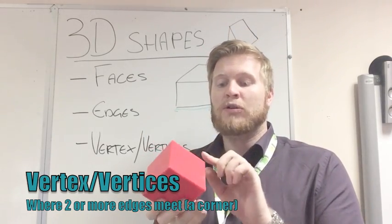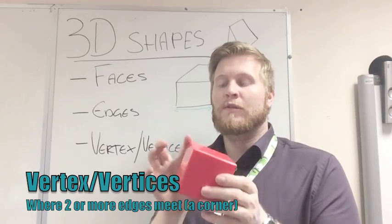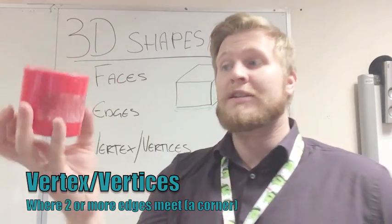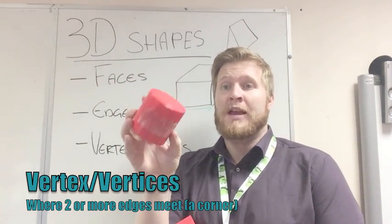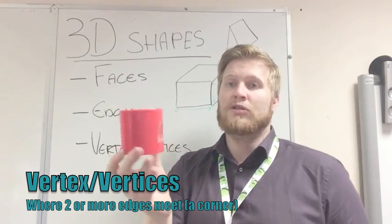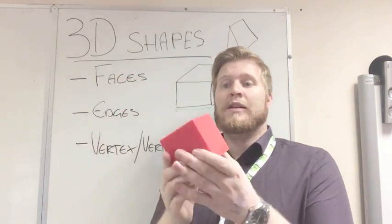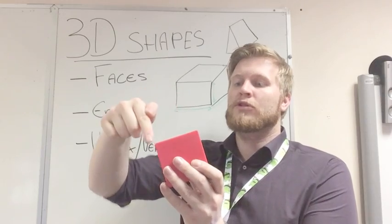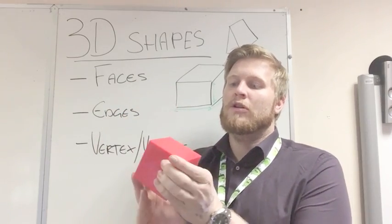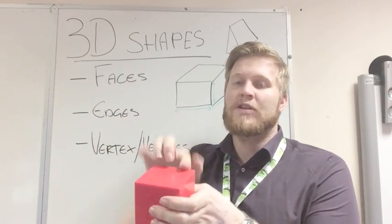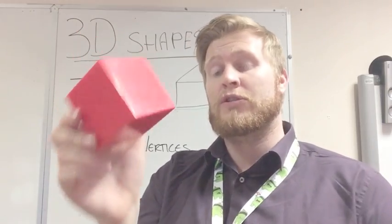The easiest way to spot them is to look for the corners. We can see on our cylinder, we don't have any vertices because none of the edges meet each other—there are no corners on it. Whereas when we look at the cube, we can see we've got one, two, three, four. Turn it over. Five, six, seven, eight. We have eight corners on that.